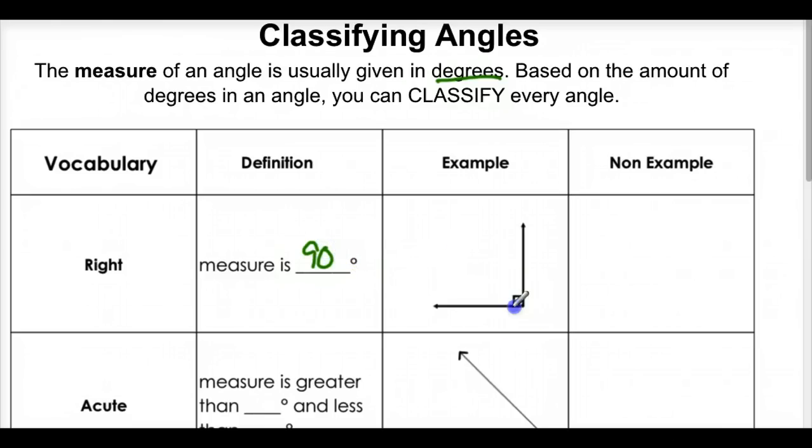And whenever we have a right angle, we draw this little square in it, and it looks like this L. And we put the square, and that means 90 degrees. A non-example, how about this? Nah, I don't like what I just drew there. That doesn't look pretty at all.